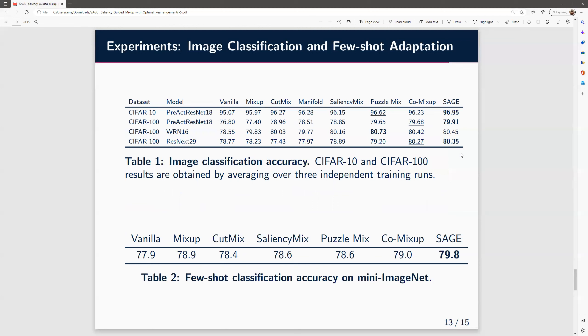The first set of experiments shows image classification and few-shot adaptation. In table one, we show on CIFAR-10 and CIFAR-100 on various architectures that SAGE achieves better or comparable classification accuracy compared to other state-of-the-art data augmentation approaches. In table two, we show that SAGE outperforms other data augmentation techniques in few-shot classification accuracy on MiniImageNet.